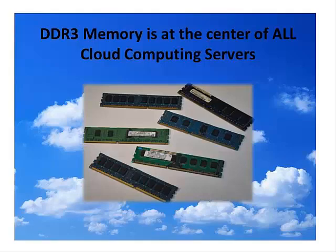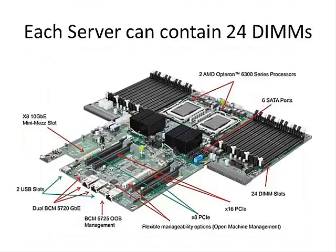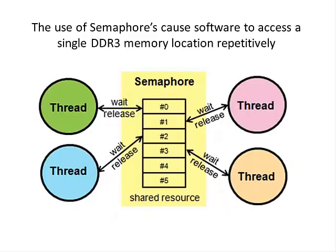In servers, the DDR memory is located on DIMMs, or Dual Inline Memory Modules. Some servers contain up to 24 DIMMs in a single machine. In many cases, software running on the servers uses semaphores and has to access the same location over and over, looking for a bit change in order to know if a task has finished. These repetitive accesses can cause this Row Hammer failure to occur.